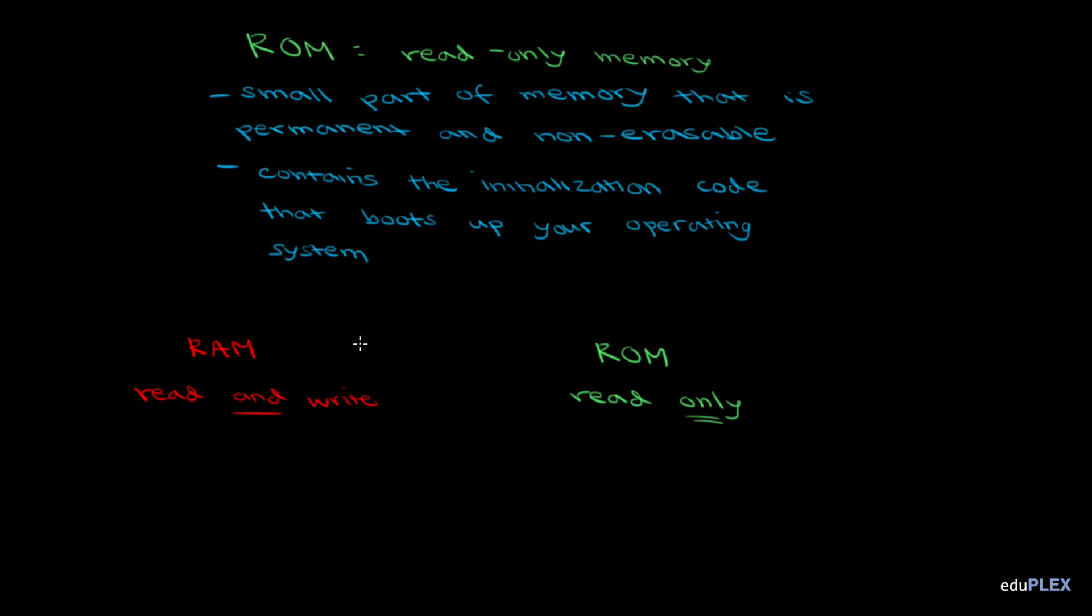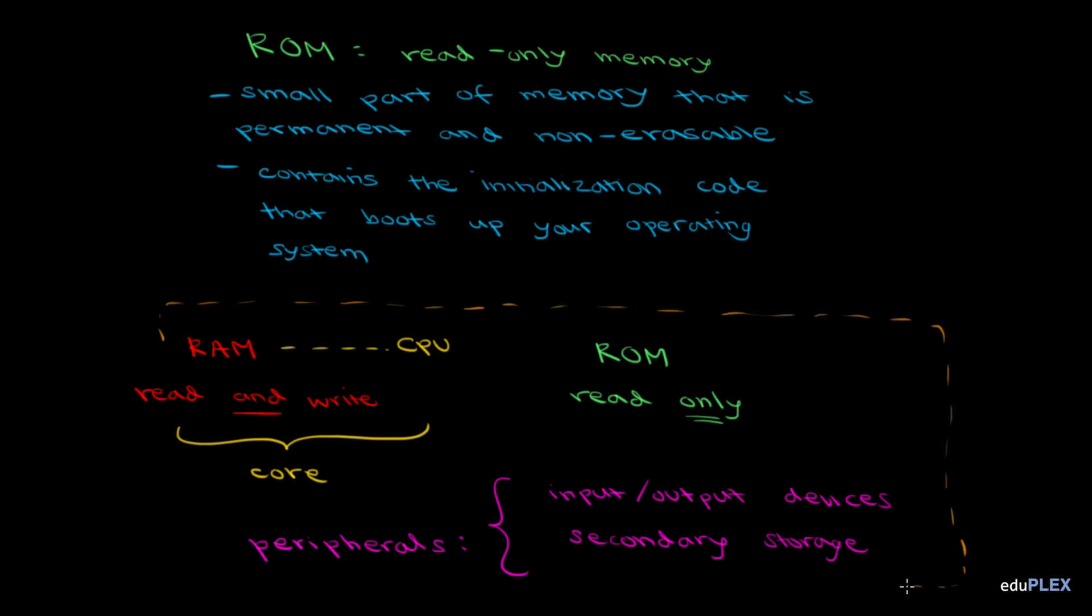So now we've covered how the CPU and main memory work in our computer systems. This is the core of our computer. Peripherals refer to anything other than CPU and main memory, so things like input and output devices and secondary storage. All of these components are the hardware of our computer systems. Next, we'll take a look at software and how programs make our hardware come to life.